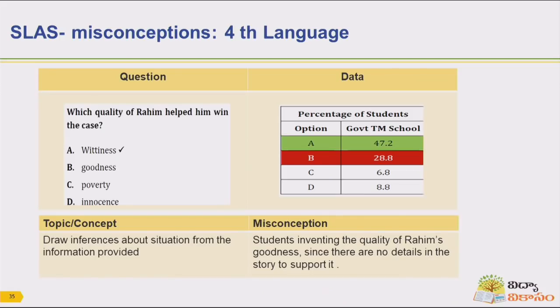Here, they are testing the quality of the person — drawing inferences about the situation from information provided. The question 'Which quality of Rahim helped him win the case?' has wittiness as the right answer, option A. But the majority of students — 28.8% — chose option B. Students are inventing the quality of Rahim's goodness since there are no details in the story to support it.